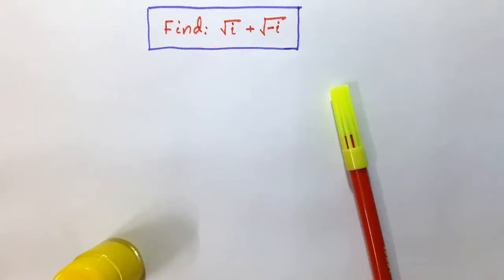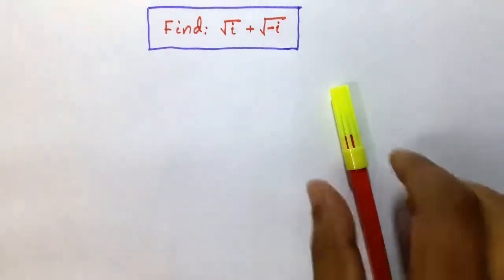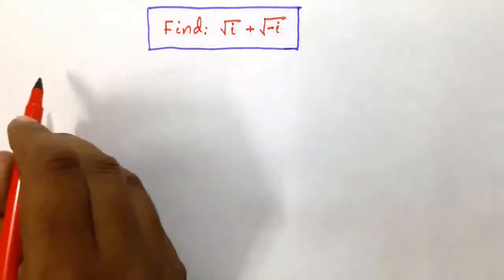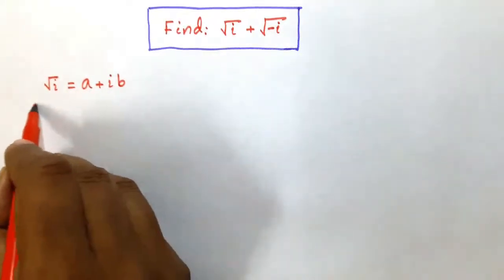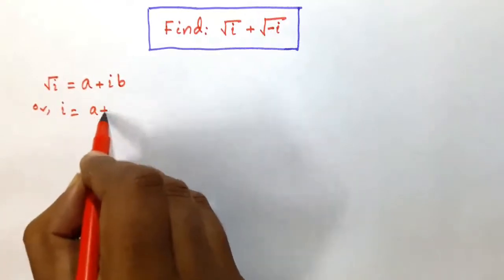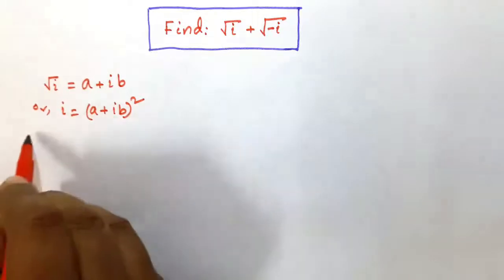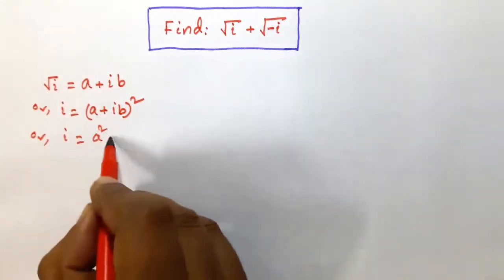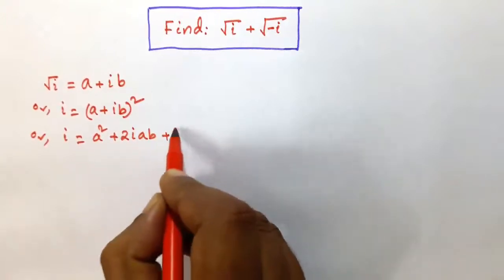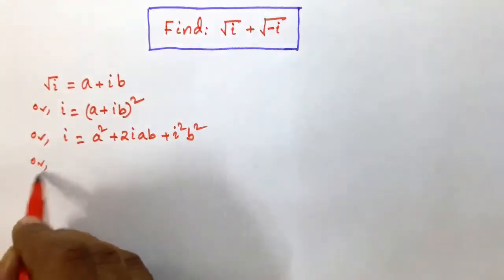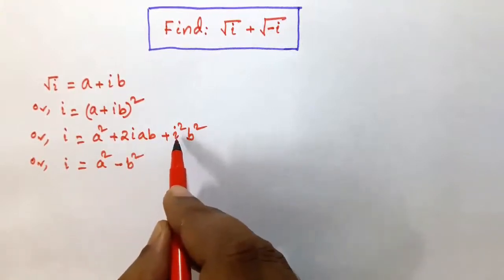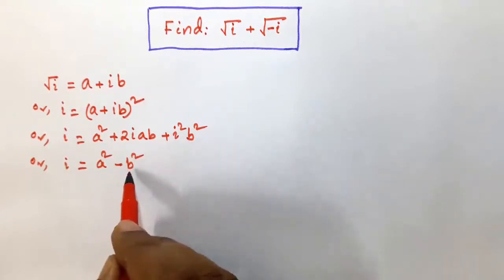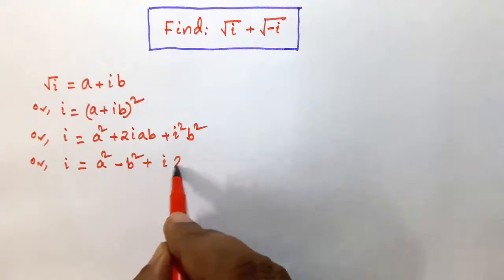Before that, we will try to find the values of root i and root minus i. Let us consider that root i is equal to a plus ib. Squaring both sides, we find i is equal to (a + ib) whole square, which gives i equal to a squared plus 2iab plus i squared b squared. Since i squared equals minus 1, i squared b squared is equal to minus b squared. Plus i into 2ab.